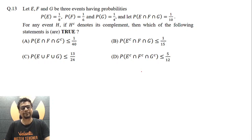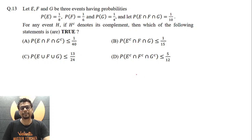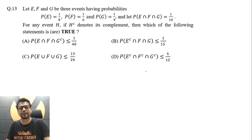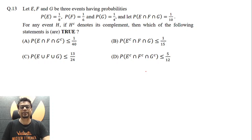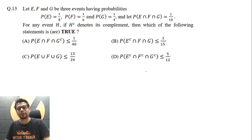Let E, F, and G be three events having probabilities: probability of E being 1/8, probability of F being 1/6, probability of occurrence of event G being 1/4, and probability of E intersection F intersection G being 1/10.